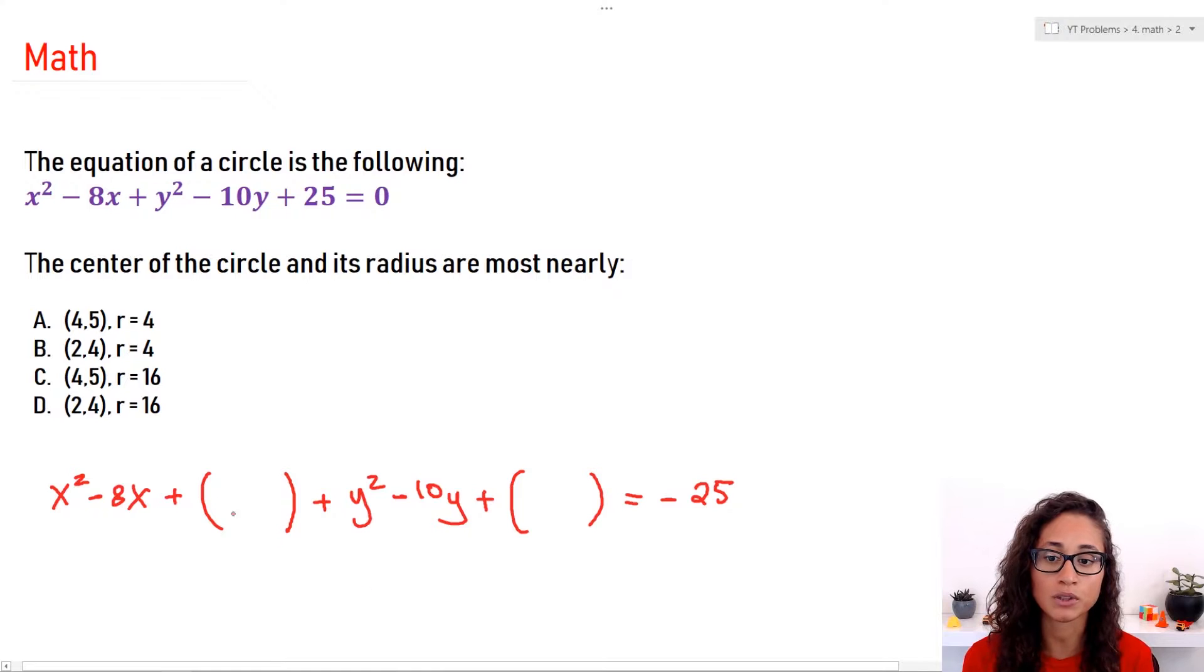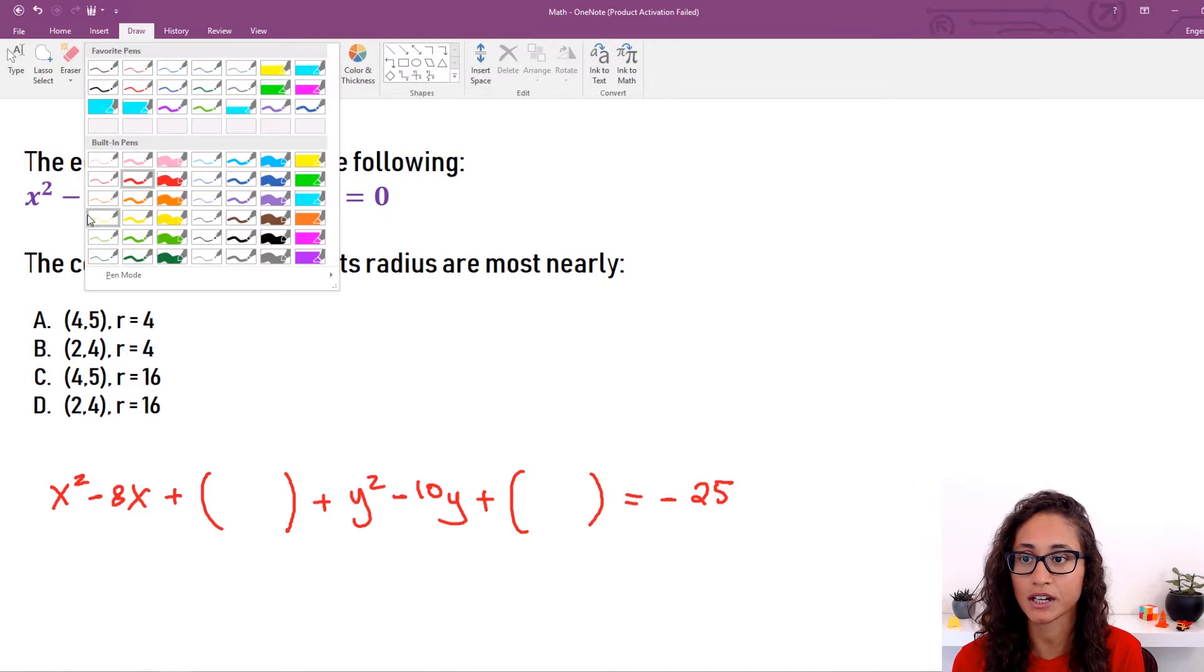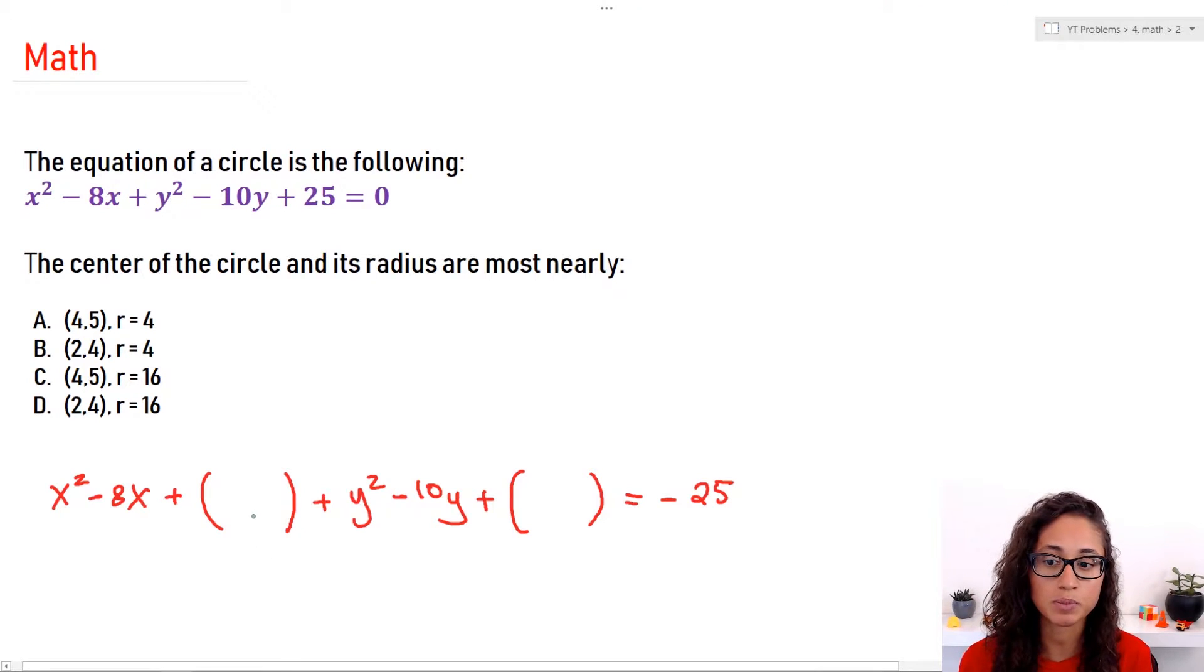So now we can come to here and then complete the square. Let's do it in a different color. So here the way we complete the square it's really simple. All you gotta do is take this number right here, divide it by 2 and then square. That's it guys. And then the same thing here. And for the negative, well we don't really care about the negative because if you put negative in the parentheses, negative squared just becomes positive. So it doesn't really affect your answer. We're going to do the same thing with 10 over 2 squared.